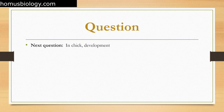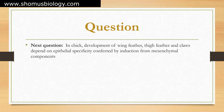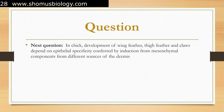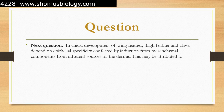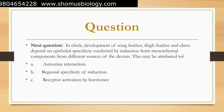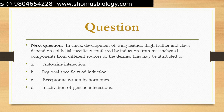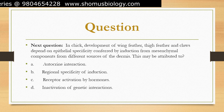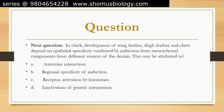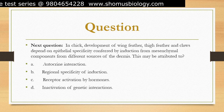In chick development, the development of wing feather, thigh feather, and claws depends on epithelial specificity conferred by induction from mesenchymal components from different sources of the dermis. This may be attributed to: A. Autocrine interaction, B. Regional specificity of induction, C. Receptor activation by hormones, D. Inactivation of genetic interactions. The correct answer is option B.